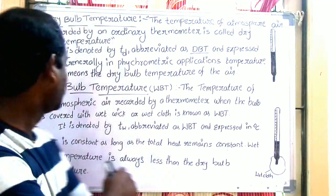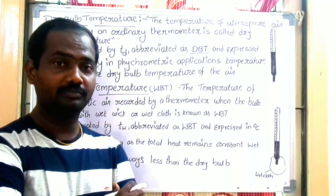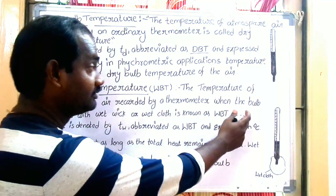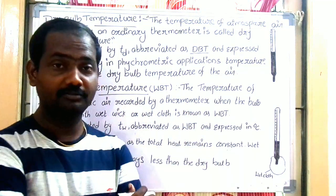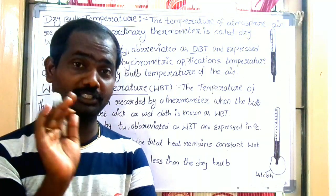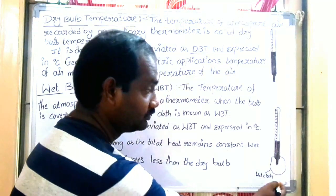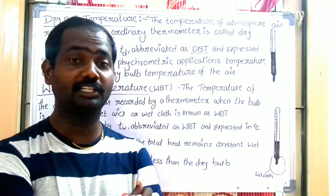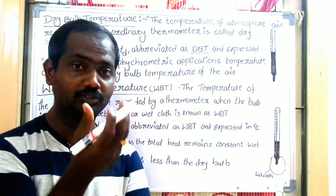Now we will discuss the Wet Bulb Temperature. The temperature of the atmosphere recorded by a thermometer whose bulb is covered with a wet cloth is known as Wet Bulb Temperature.